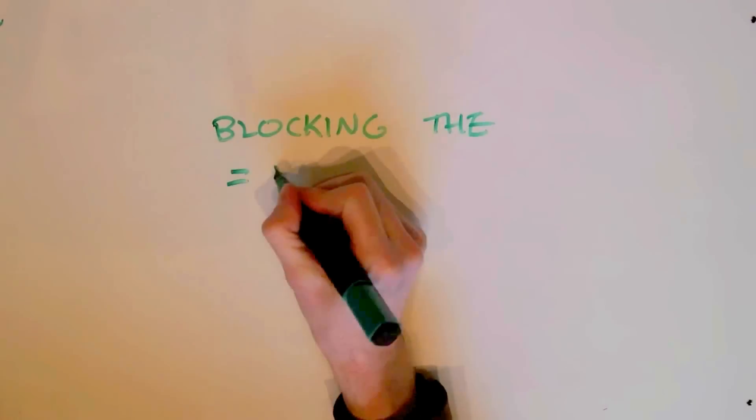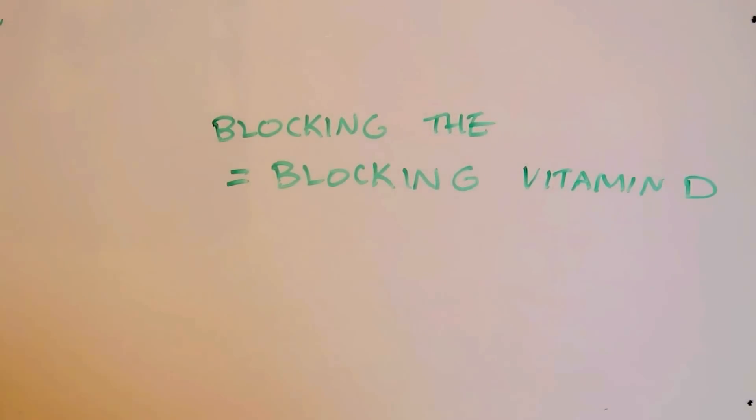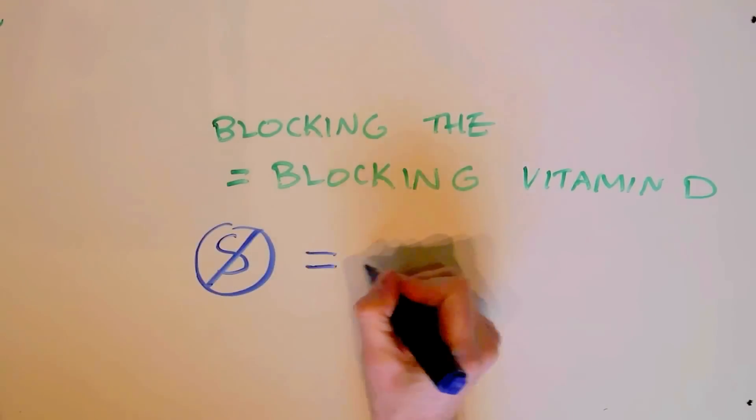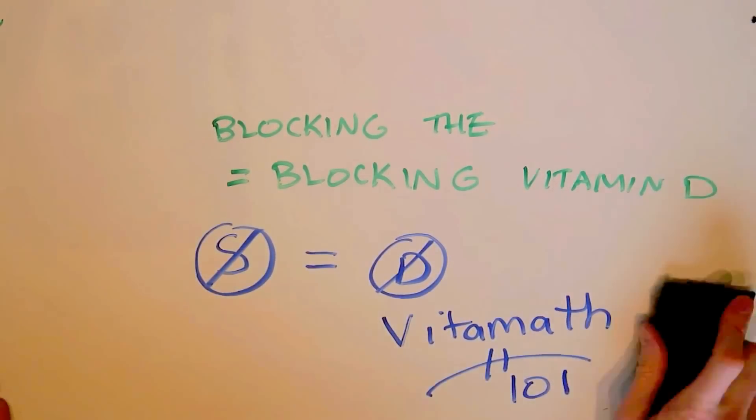So we're not getting as much vitamin D in the summer, for example, than we would normally need. So blocking the sun means blocking vitamin D. No sun equals no D. Vitamin Math 101.